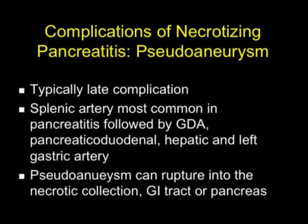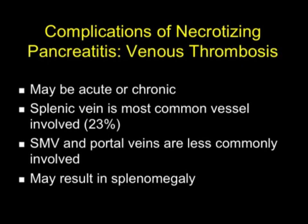When speaking of complications, I'm typically always worried about pseudoaneurysms. It's typically a late complication and is more common in patients with repeated episodes of pancreatitis. The splenic artery is the most common vessel involved, followed by the GDA, pancreaticoduodenal, hepatic, and left gastric arteries. Pseudoaneurysm can rupture into a necrotic collection, into the GI tract, pancreas, or retroperitoneum, and these patients can bleed to death. On the venous side, complications can be acute or chronic, with the splenic vein being the most common vessel involved; the SMV and portal veins can also be involved, but less commonly.